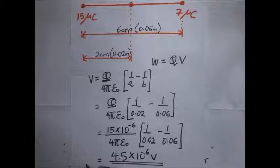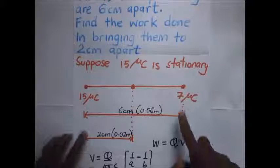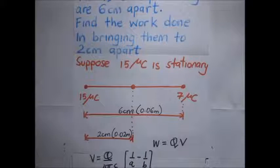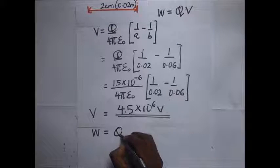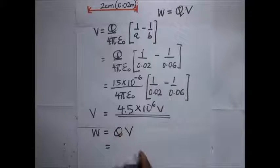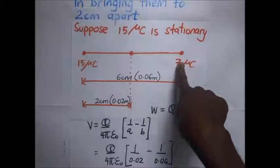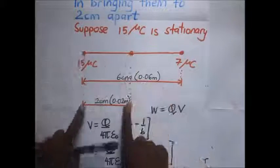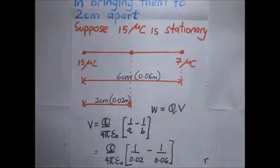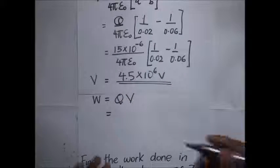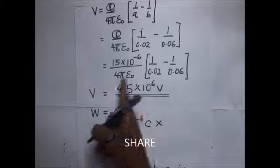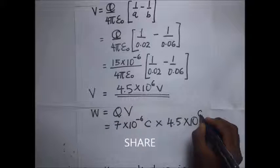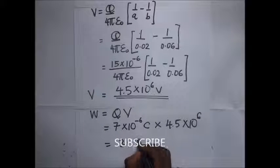After getting our potential difference V, we now find the work done in moving the charge from 6 centimeters to 2 centimeters apart. Work done equals q times V. Our value of q here is the moving charge — 7 microcoulombs, which is 7 × 10⁻⁶ coulombs — multiplied by the potential difference of 4.5 × 10⁶. Our value of work done is going to be 31.5 joules.